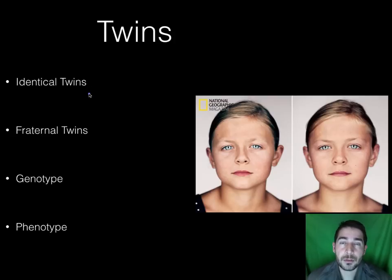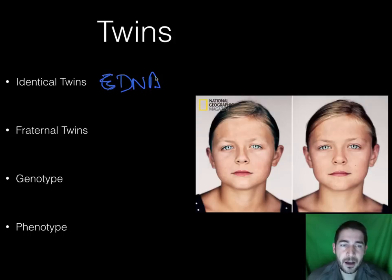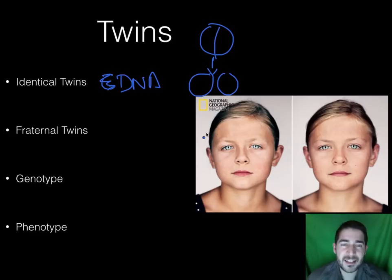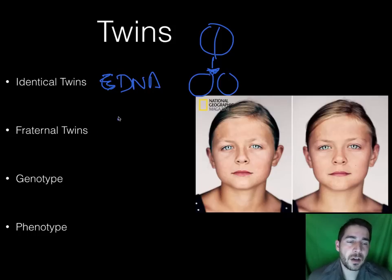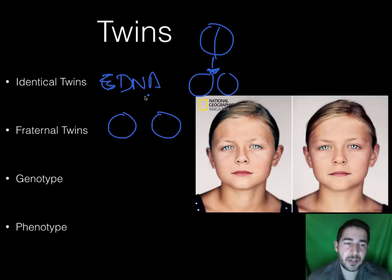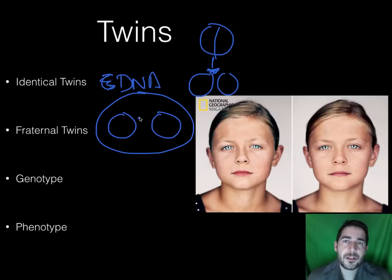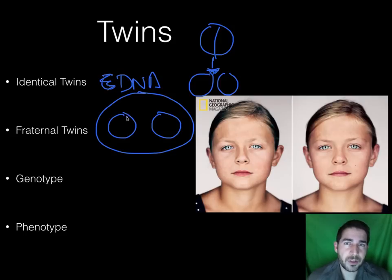Identical twins come from a single egg — the egg splits and they share the exact same DNA. Fraternal twins are two completely separate babies with completely separate DNA; they just share the same womb. They're no more similar than a brother and sister born in different years. The similarity they share is the same environment while they're growing before birth.